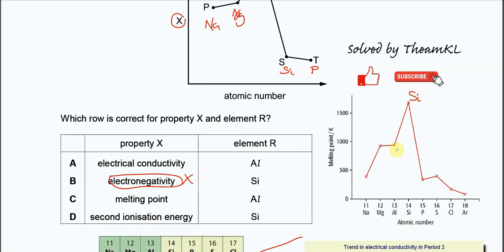After that, after silicon, it will go down to phosphorus. Phosphorus is a simple molecular structure, P4.